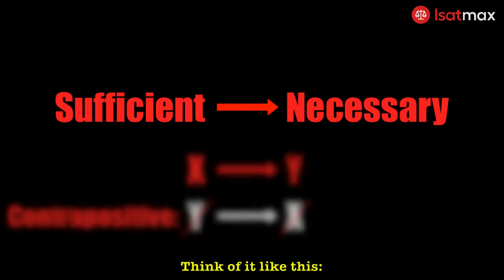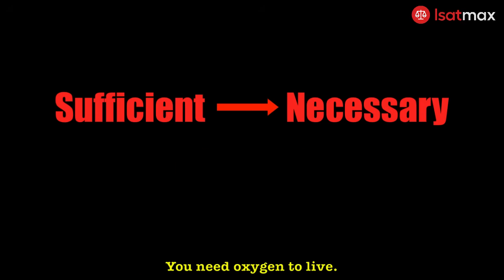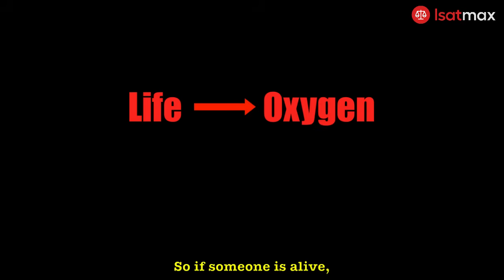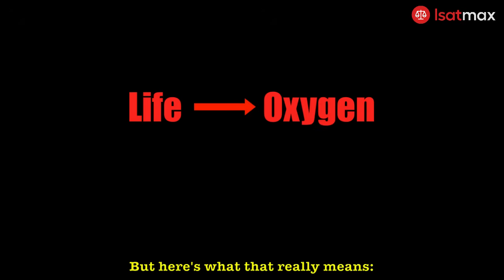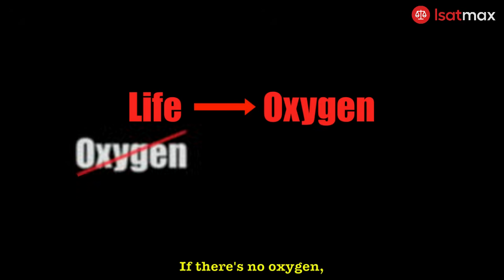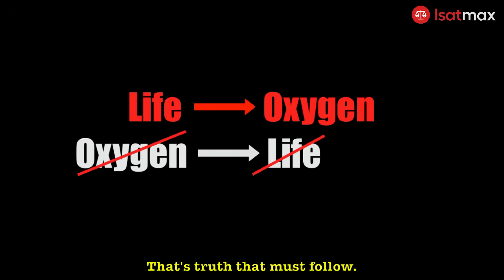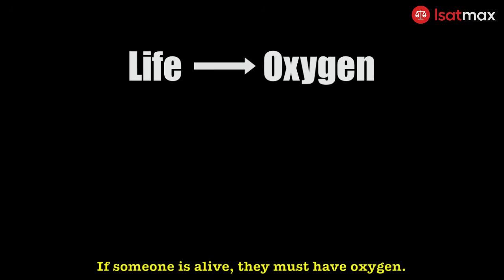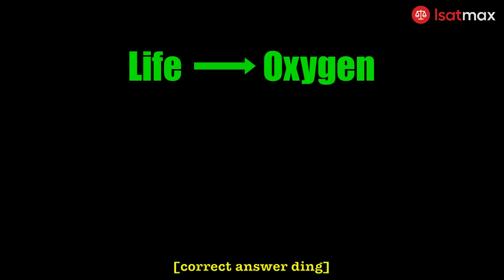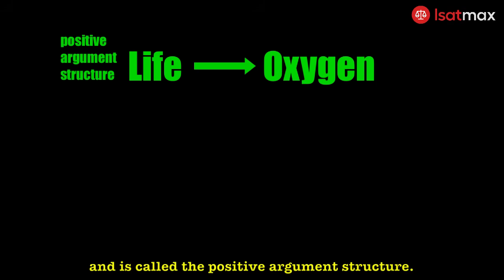Think of it like this: you need oxygen to live. So if someone is alive, they must have oxygen. But here's what that really means — if there's no oxygen, there can be no life. That's not a guess. That's truth that must follow. If someone is alive, they must have oxygen. This must be true, and is called the positive argument structure.